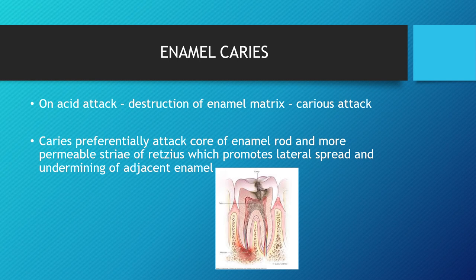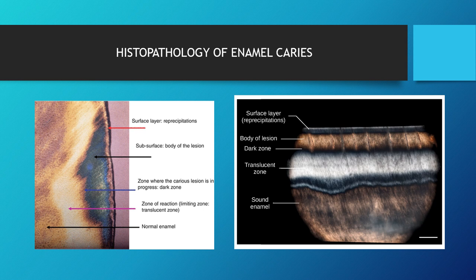Enamel caries: on acid attack there is destruction of enamel matrix. Caries preferentially attack the core of enamel rods, and the striae of Retzius and other hypocalcified structures are prone to caries attack. The iron promotes lateral spread and undermining of adjacent enamel. Histopathology of enamel caries shows four zones: the surface layer; the body of the lesion (highest pore volume, highly porous); the dark zone (caries lesion in progress); and the translucent zone (a limiting zone of reaction), followed by normal enamel.